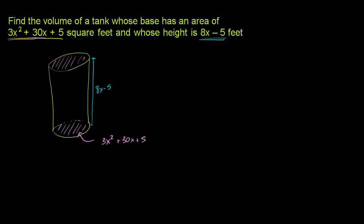And if you want to find the volume of a three-dimensional object like this, you just multiply the area of the base times the height. So the volume is going to be the area of the base, which is 3x squared plus 30x plus 5 times the height, times 8x minus 5.